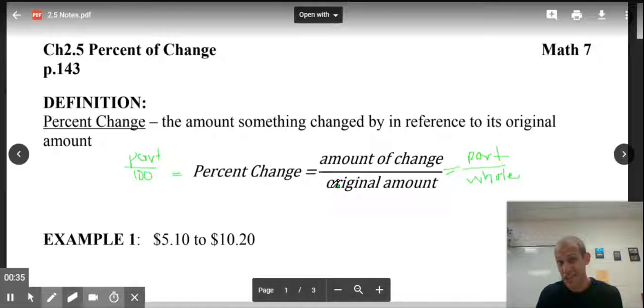It's essentially the same thing that we've always been doing, the part out of the whole. The part in this case is how much something has changed by. That's going to give us the part out of 100, which is the percent. We're just calling it percent change because the change is the thing that we're putting into the part. So we're still looking for a percent. We always do the part divided by the whole for a percent, always.